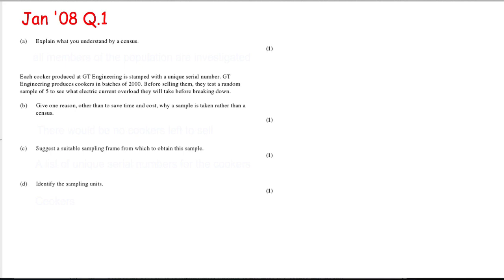Next question: explain what you understand by a census. A census is just when we question or investigate all members of a population. All members of the population are investigated, that's a census. Each cooker produced by GT engineering is stamped with a unique serial number. GT engineering produces cookers in batches of 2,000. Before selling them, they test a random sample of five to see what electric current overload they will take before breaking down. State giving one reason other than to save time and cost why the sample is taken rather than a census. Well, simply, if we tested everything, all members of the population, which would be all cookers, there would be no cookers left to sell.